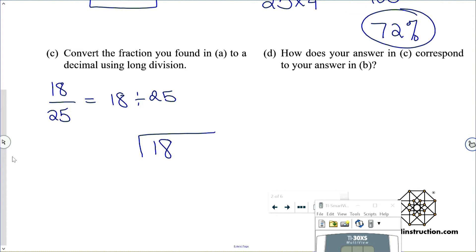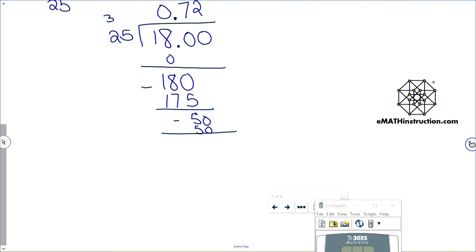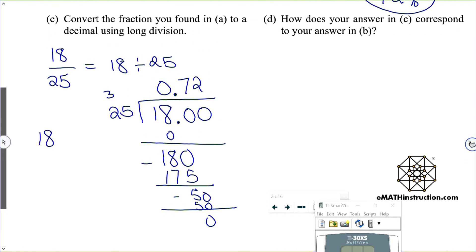We've got 18 divided by 25. I'll put some decimal points in. 25 goes into 18 zero times, subtract and get 18, then drop a zero down and put the decimal point up. I'll go with 7 — seven times 25 is 175, subtract to get 5, drop another zero, 25 goes into 50 twice giving 50, subtract to get zero. So 18 twenty-fifths equals 0.72.